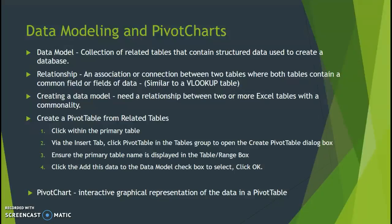A data model, being a collection of related tables, is a concept similar to working with a database — you have information in one table and information in another table, and they share one or two common fields. That shared connection is called a relationship, defined as an association between two tables where both contain a common field or fields of data.